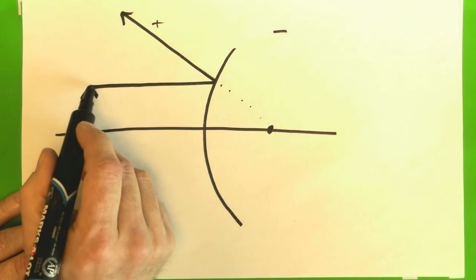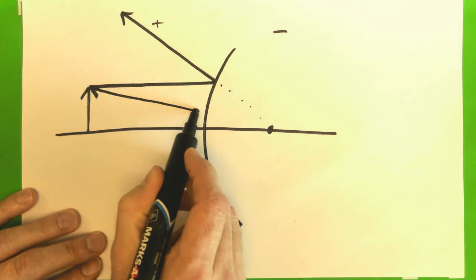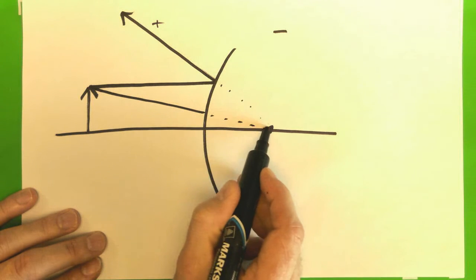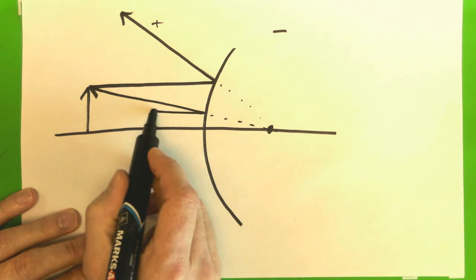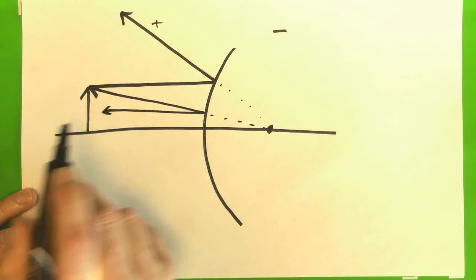Another ray is going to go as if towards that focal point and bounce straight off like that.